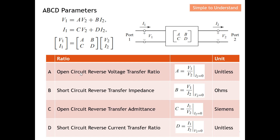So A is known as the open-circuit reverse voltage transfer ratio because it is input over output — making it a reverse voltage transfer ratio. The unit for A is unitless because it is voltage over voltage, so they cancel each other out.